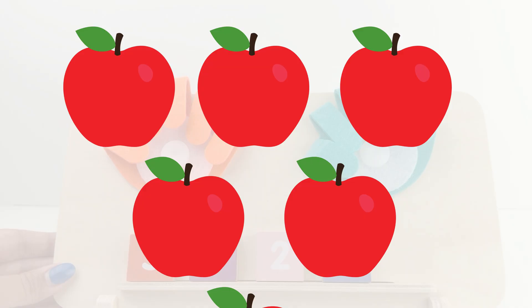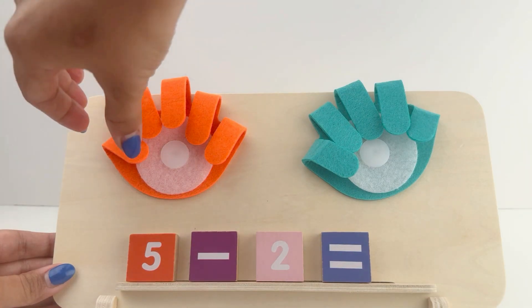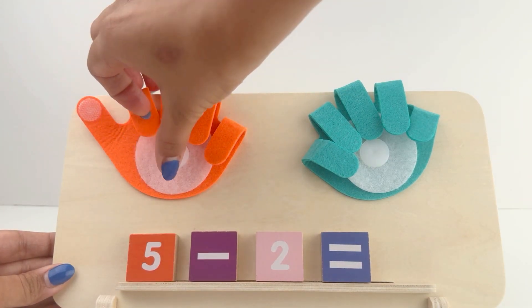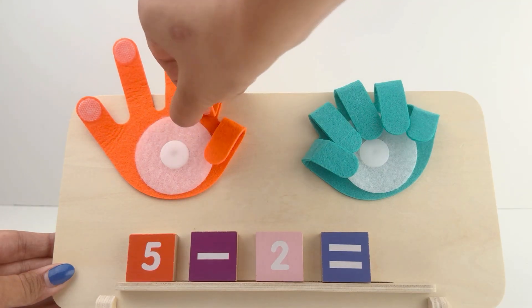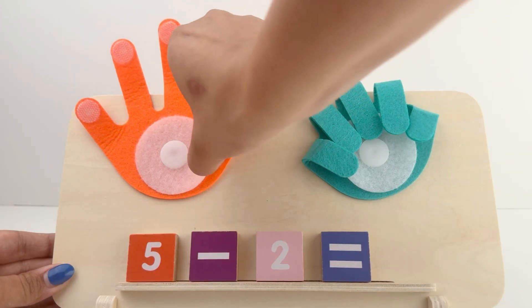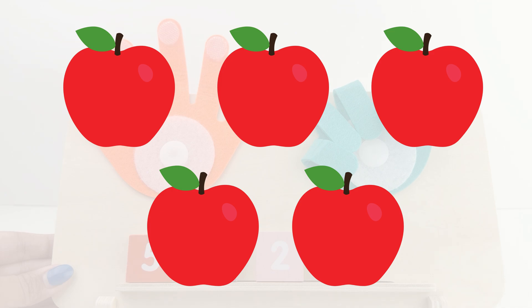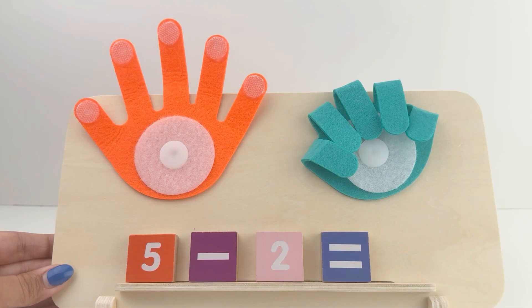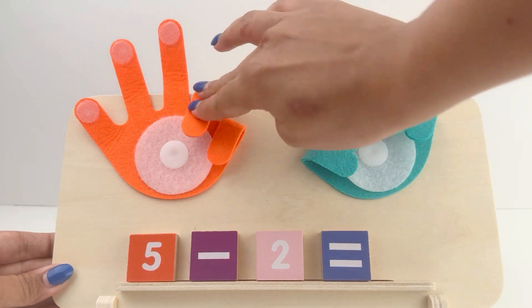Let us imagine you had 5 apples. 1, 2, 3, 4, and 5. And out of those 5 apples, you ate 2 apples. Let's close 2 fingers on the orange hand. 1 and 2.